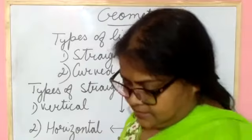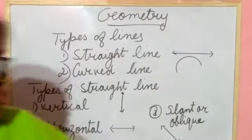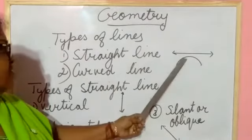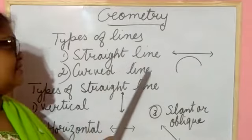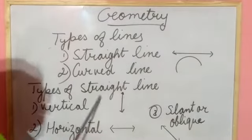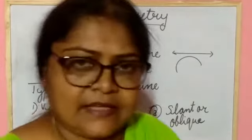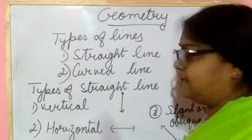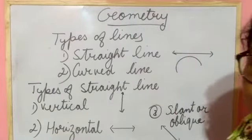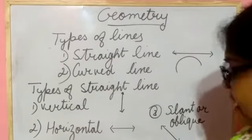So, lines are two types: straight line and curved line. After that, types of straight line — there are three types. Number one is the vertical line. Second one, if a line is like this, we call it horizontal. If a line is like this, we call it a slanting or oblique line.